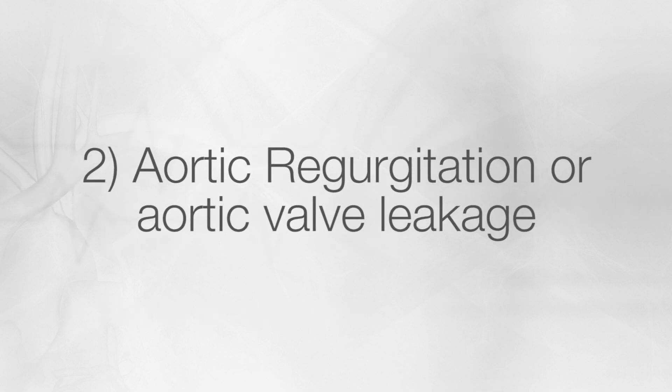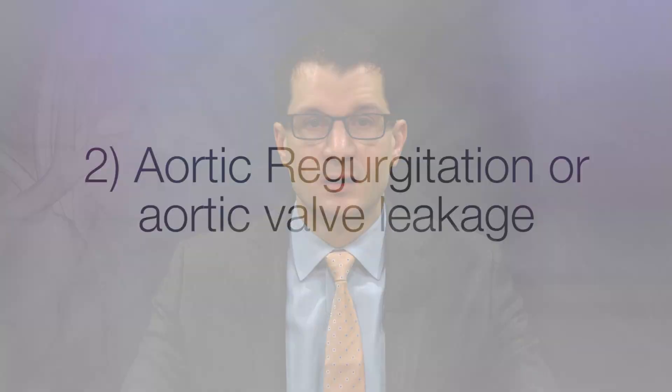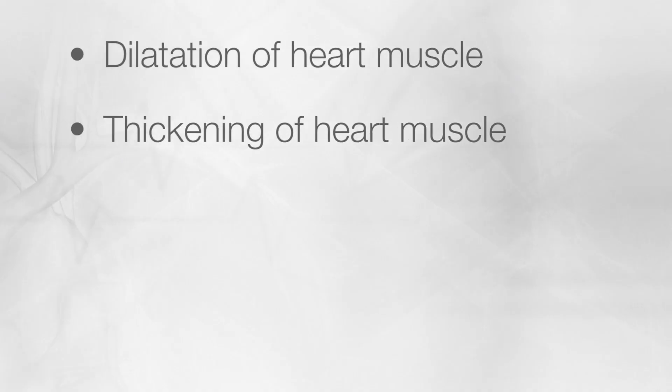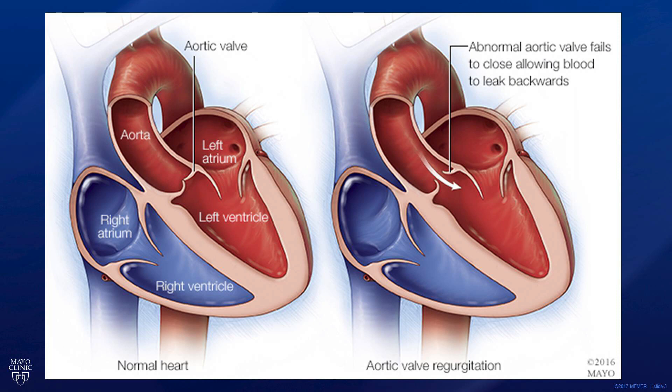By contrast, aortic regurgitation is a condition where there's significant leakage of the valve from the ascending aorta backwards into the heart. Instead of a pressure overload phenomenon, this results in a volume overload phenomenon. This can cause dilatation of the heart muscle as well as thickening of the heart muscle. There are a variety of reasons why the aortic valve can leak. Most commonly, this results from a structural abnormality of the valve itself.